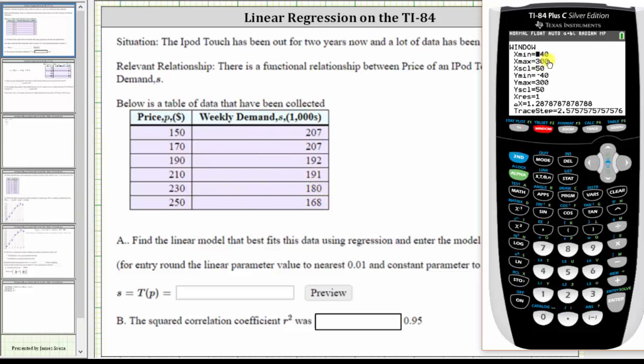The next step is to turn the stat plot on. To do this, we press second, y equals. And notice how plot one is already on, but if it was off, we would press enter. Highlight on, press enter.